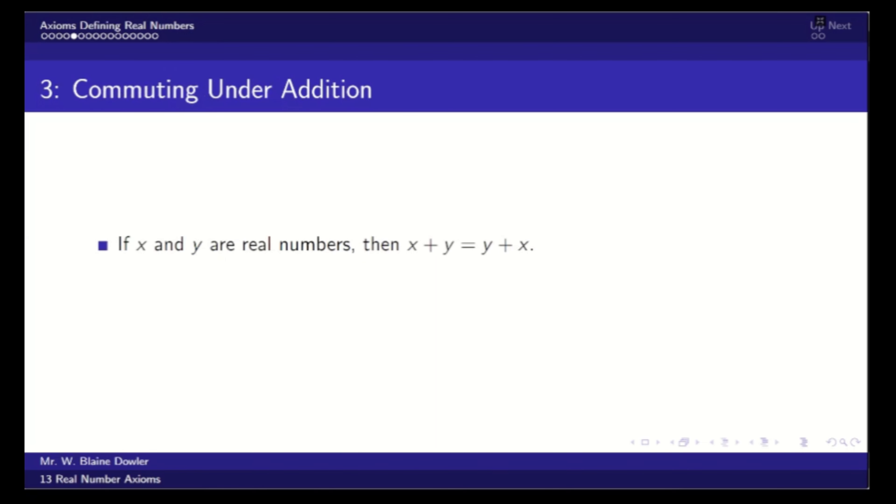Axiom number three, commuting under addition. So if x and y are real numbers, then x plus y equals y plus x. When we have two numbers, it doesn't matter in which order we add them.